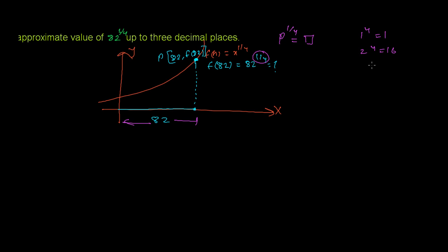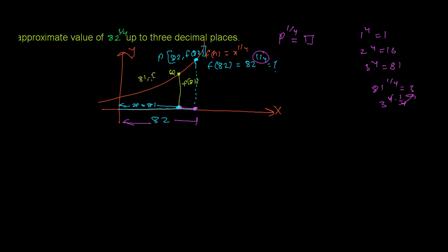3^4 = 81 — we get it! Because 81^(1/4) = 3. You know, 81 is 3^4, and (3^4)^(1/4) gives 3, since the fours cancel. So we found 81 — a number slightly smaller than 82 whose one-fourth power is a perfect number. We always need such a number whose given power yields a perfect number. Let's call 81 our x, and the corresponding y-coordinate is f(81).